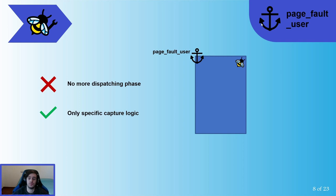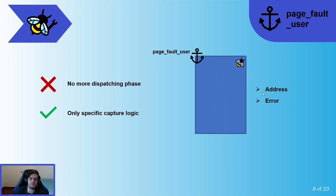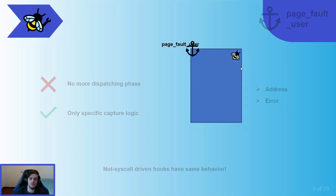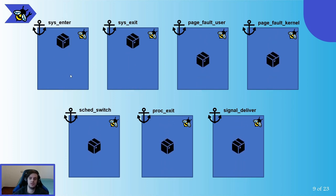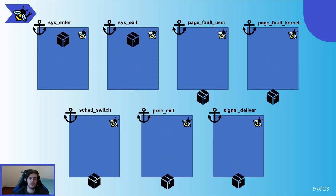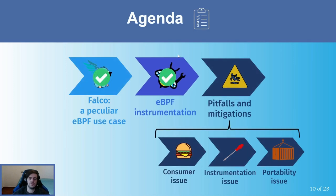If we consider a different hook from the syscall one — for example the page fault user — the flow is simpler. We don't need the dispatching phase, and we only have to manage the specific capture logic. Here we collect data regarding the page fault, like the address and the error, and send them to user space. All non-syscall hooks have exactly the same behavior. In summary, sysenter and sysexit hooks generate far more events than the others, because they are triggered every time a new syscall is executed.